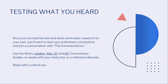Once you've read the text a couple of times and done some basic research and outlined a research path for yourself, you can begin to test your preliminary conclusions and join a conversation with the commentators. To find commentaries, you can use the library catalog, the ATLA religion database, and the Old Testament and New Testament commentary guides available on the PITS website. Or you can speak with your instructor or a reference librarian about additional resources. The most important thing as you begin turning to commentaries is to read them with a critical eye — no commentary will answer every question, and every commentary has its own perspective.